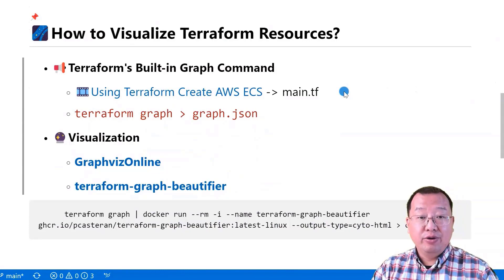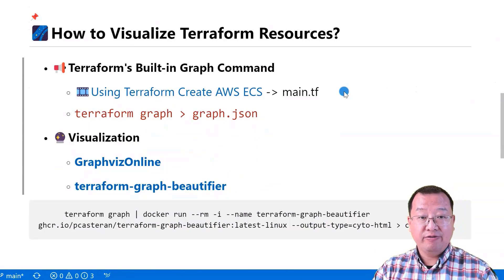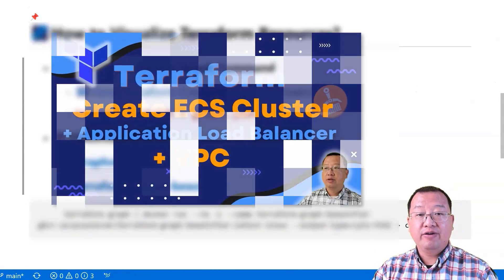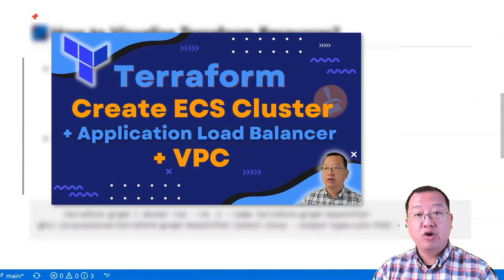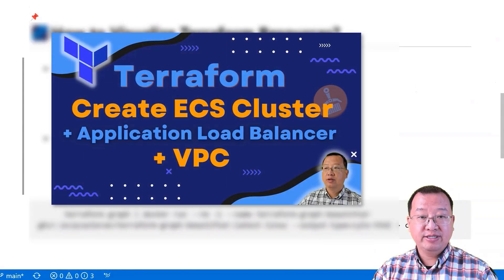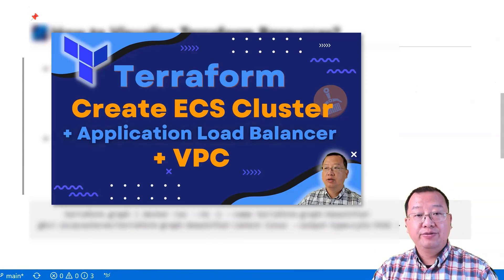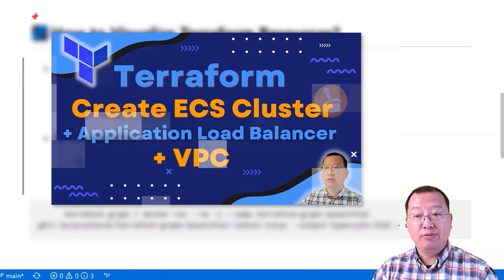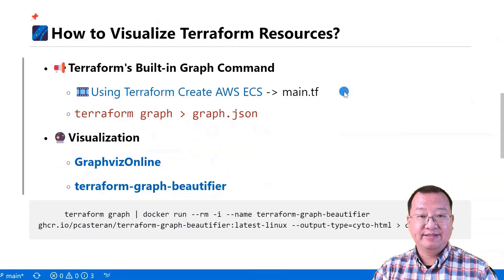In my demo, there is only one main.tf file. The file has 14 AWS resources. If you're interested in the details, please watch the video on using Terraform to create AWS ECS.